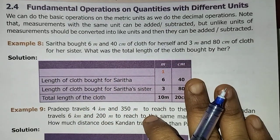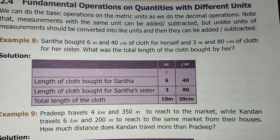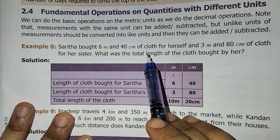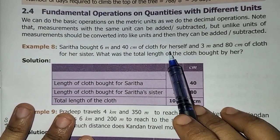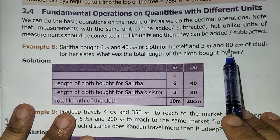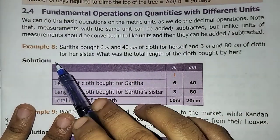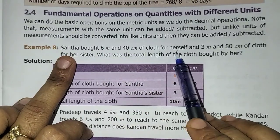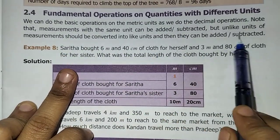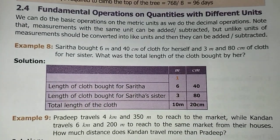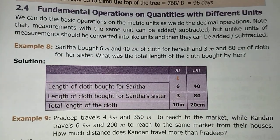Hello students, welcome to OnePlusOne channel. In this problem, Sarita bought 6 meters and 40 centimeters of cloth for herself and 3 meters and 80 centimeters of cloth for her sister. What was the total length of the cloth bought by her? So the question is asking for the total.